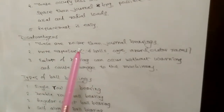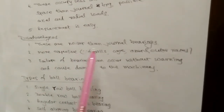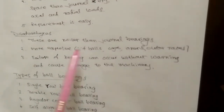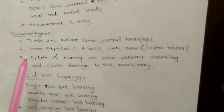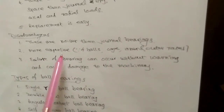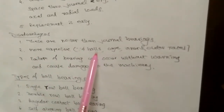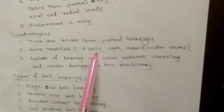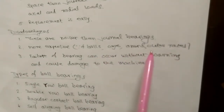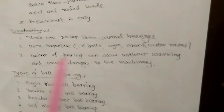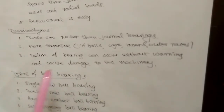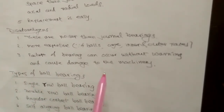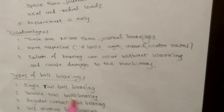For disadvantages: these bearings are noisier because there is metal-to-metal contact. They are more expensive because of the presence of balls, cages, inner races, and outer races. Additionally, failure of the bearing can occur without any warning, which causes damage to the machinery.